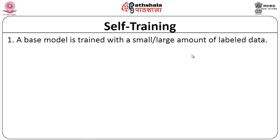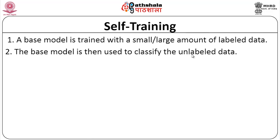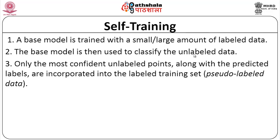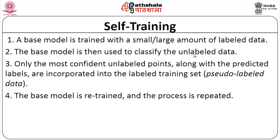A base model is trained with a small amount of labeled data. The base model is then used to classify the unlabeled data. Only the most confident unlabeled points, along with their predicted labels, are incorporated into the label set — called pseudo-labeled data. The base model is retrained and the process is repeated, with the base model continuously getting retrained.